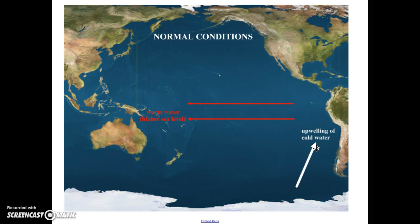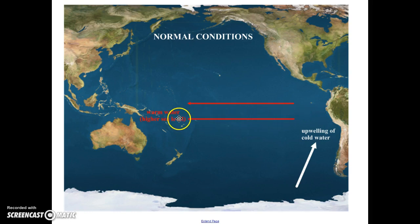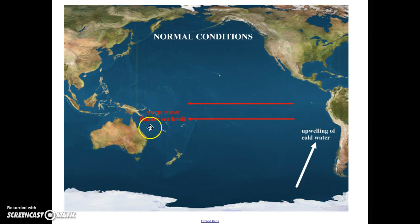Interestingly, not only does the warm water get pushed to the west, but because it's getting pushed, it actually makes the ocean higher on the west — typically about one-half of a meter higher. We know that if the warm water is in the west, it's going to heat up the air in the west.